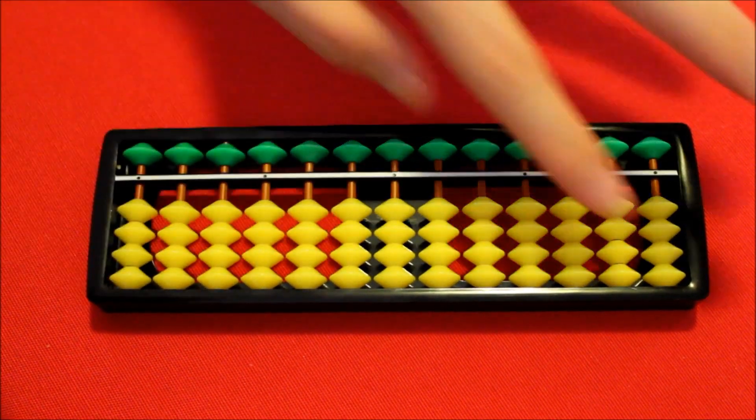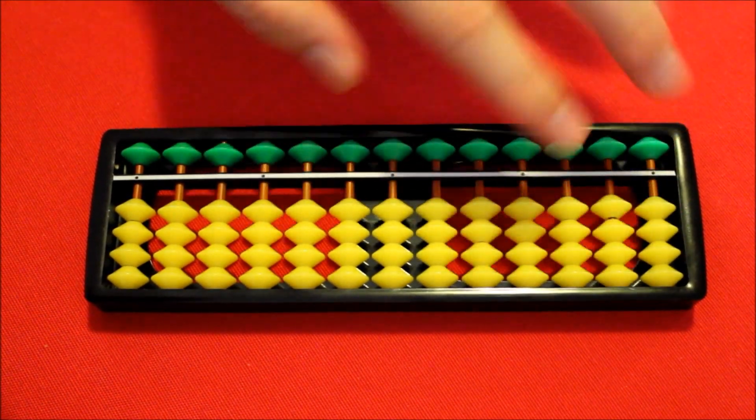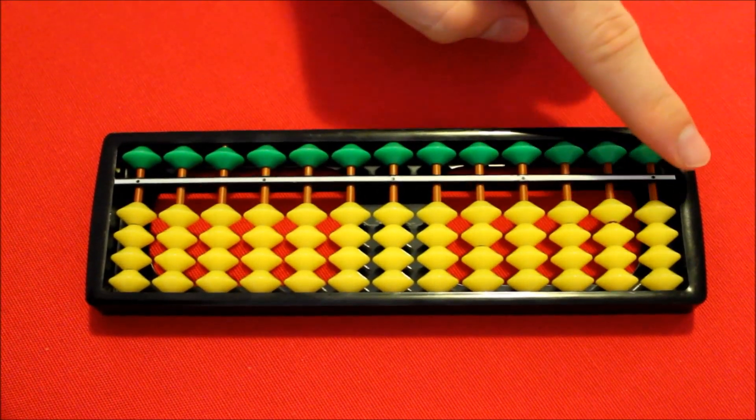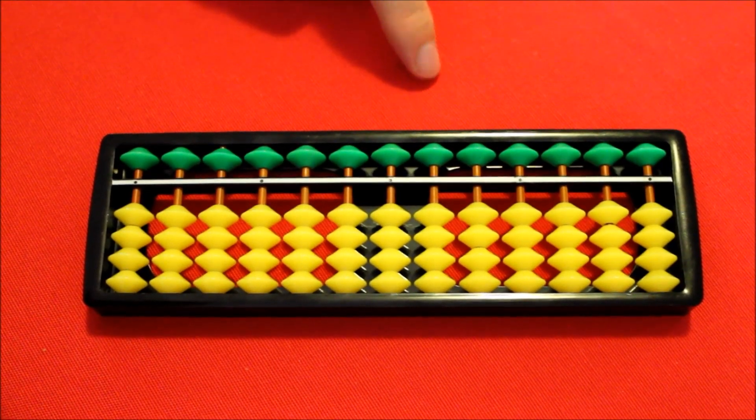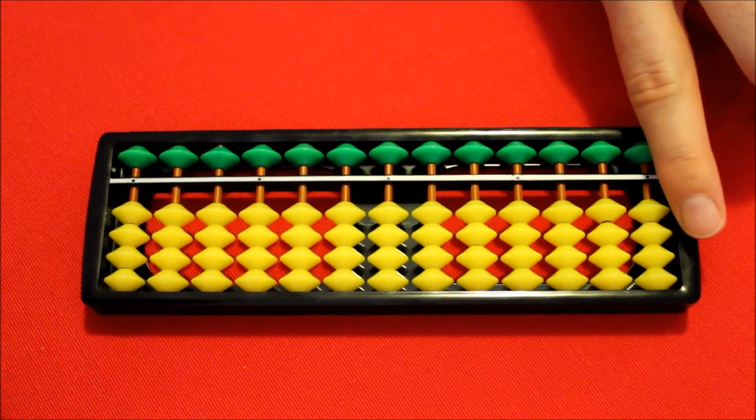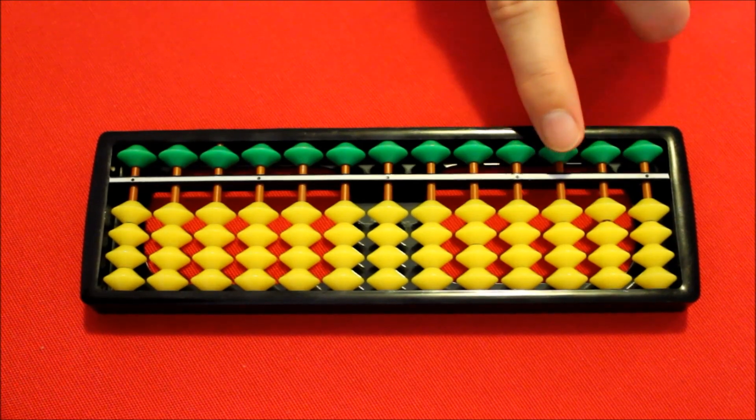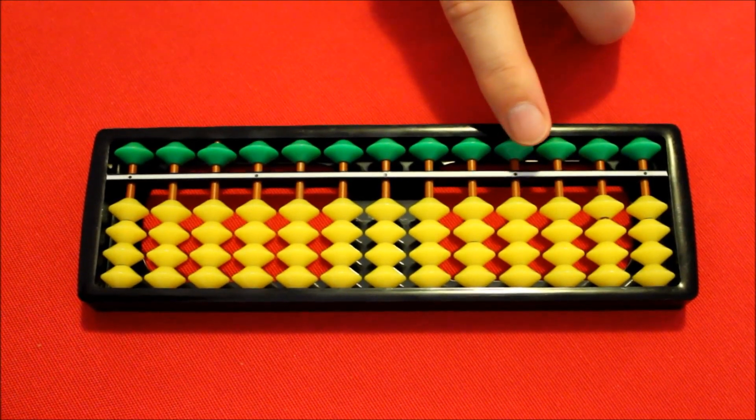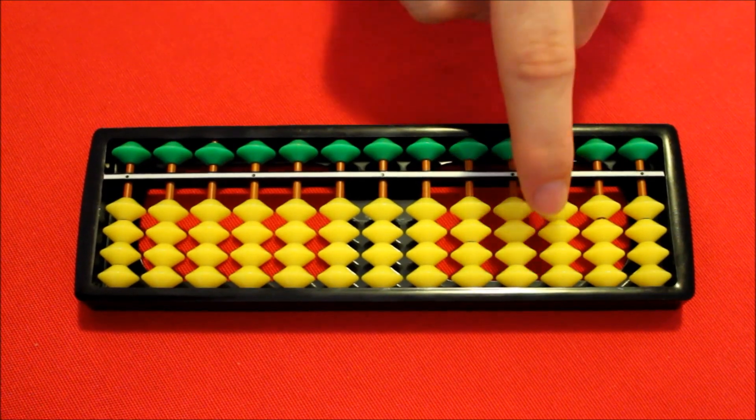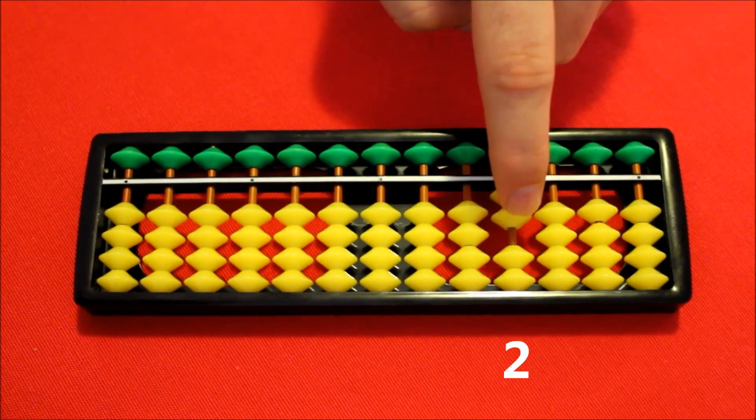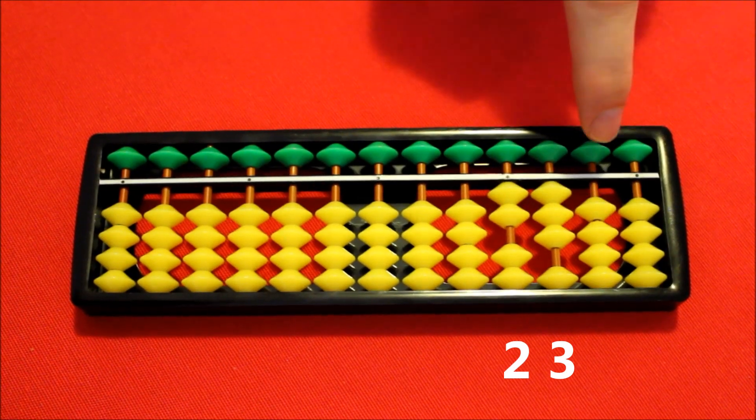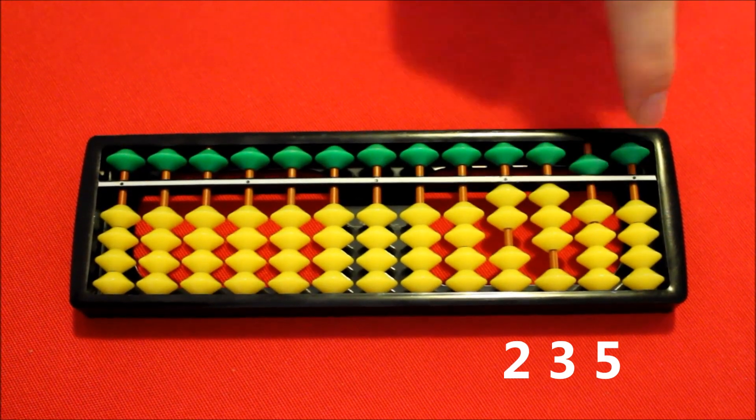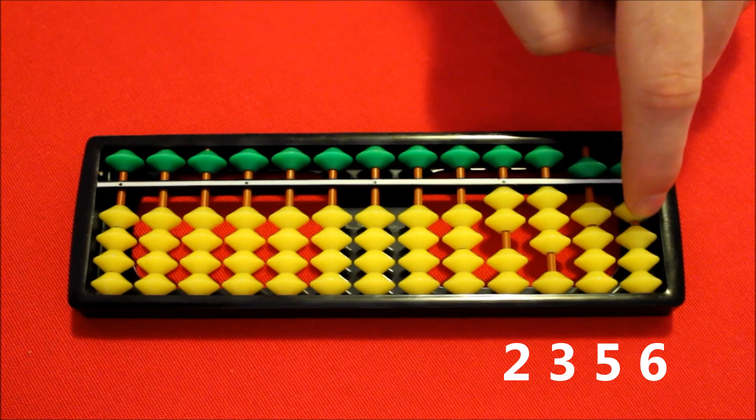Firstly, a quick recap. These yellow beads here are the earthly beads and they're worth one, and these green beads are the heavenly beads and they're worth five. The way we're going to use it, this column's the ones, these are the tens, the hundreds and the thousands. So for example, here's a number: two thousand, three hundred and fifty-six.